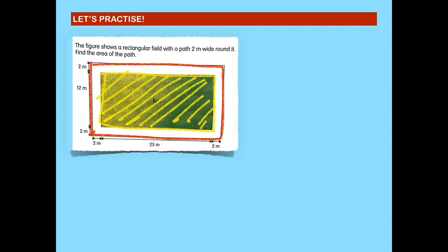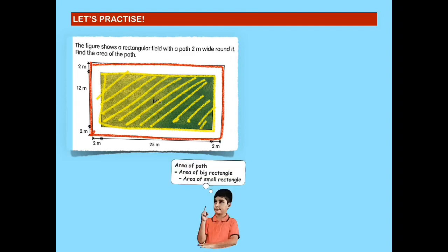We can think of the whole as the big rectangle, which includes the area of the path, and the small rectangle, which is the area of the rectangular field. To get the area of the path, we would be subtracting the area of the big rectangle minus the area of the small rectangle. Let's first find the area of the big rectangle.